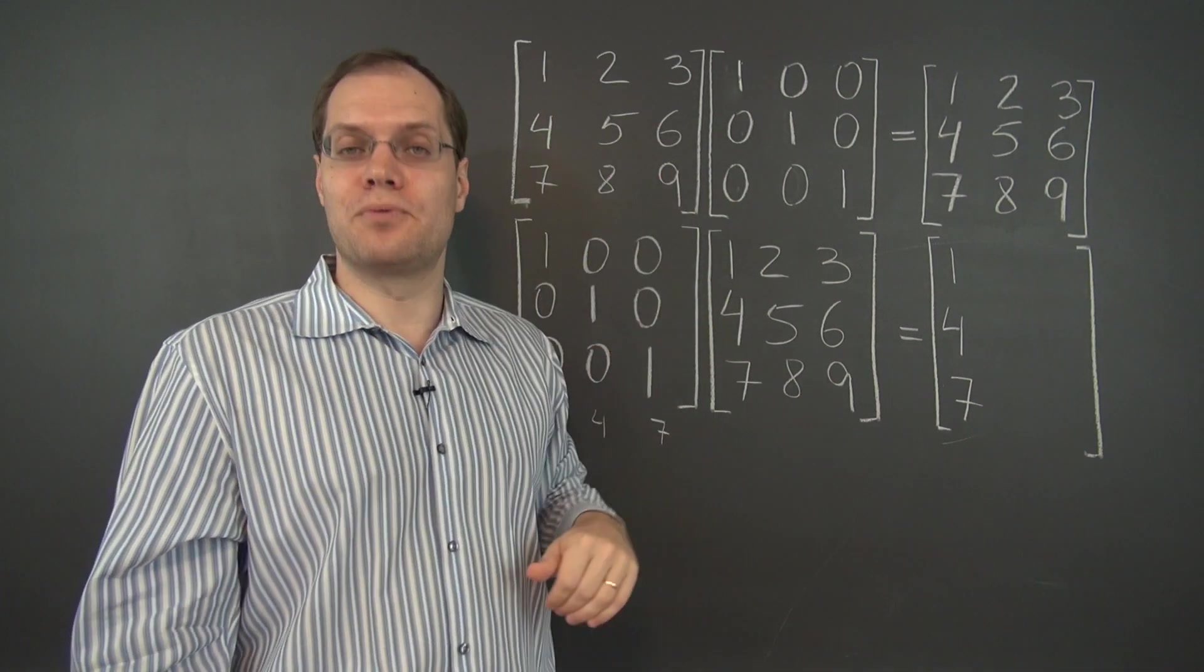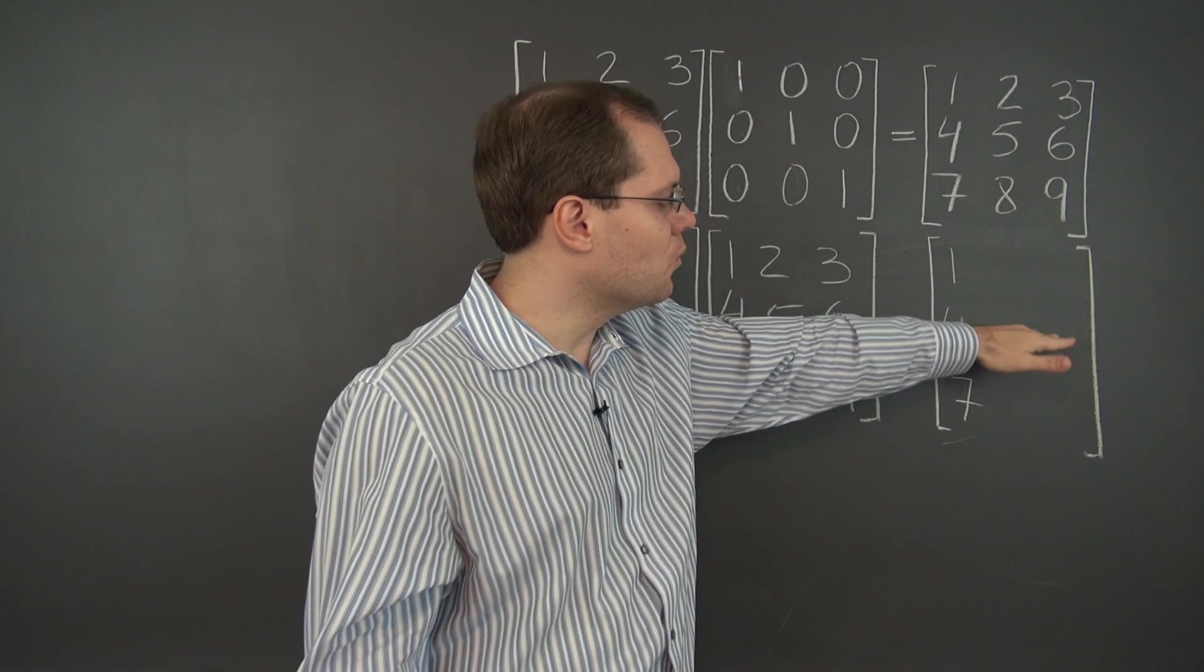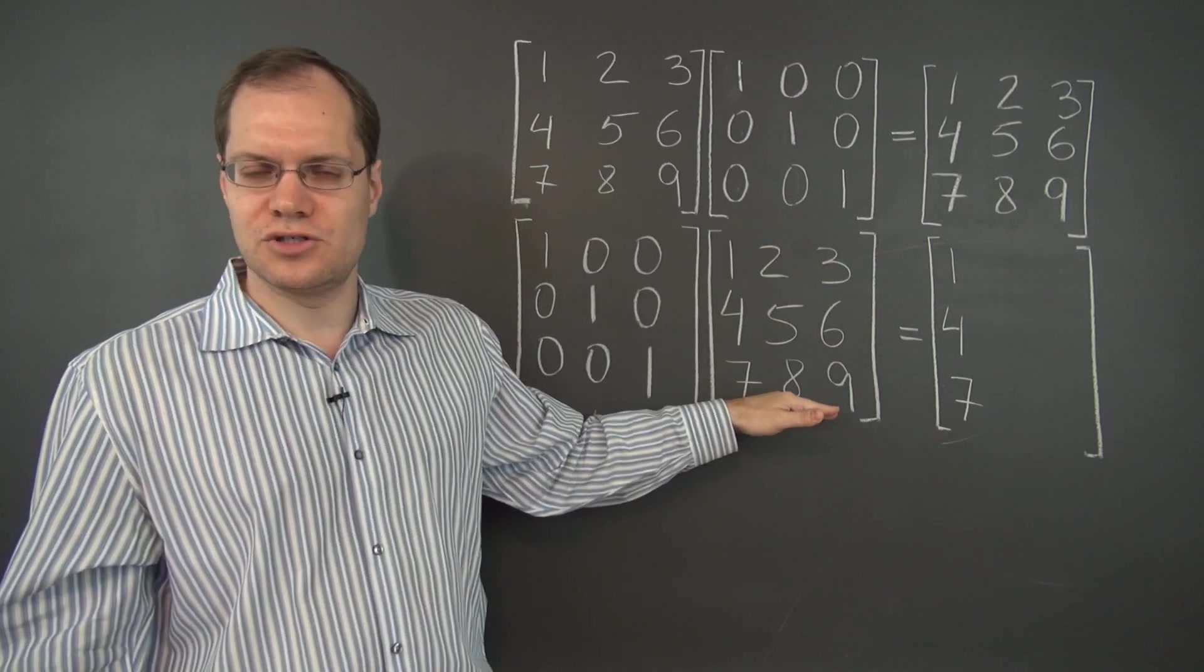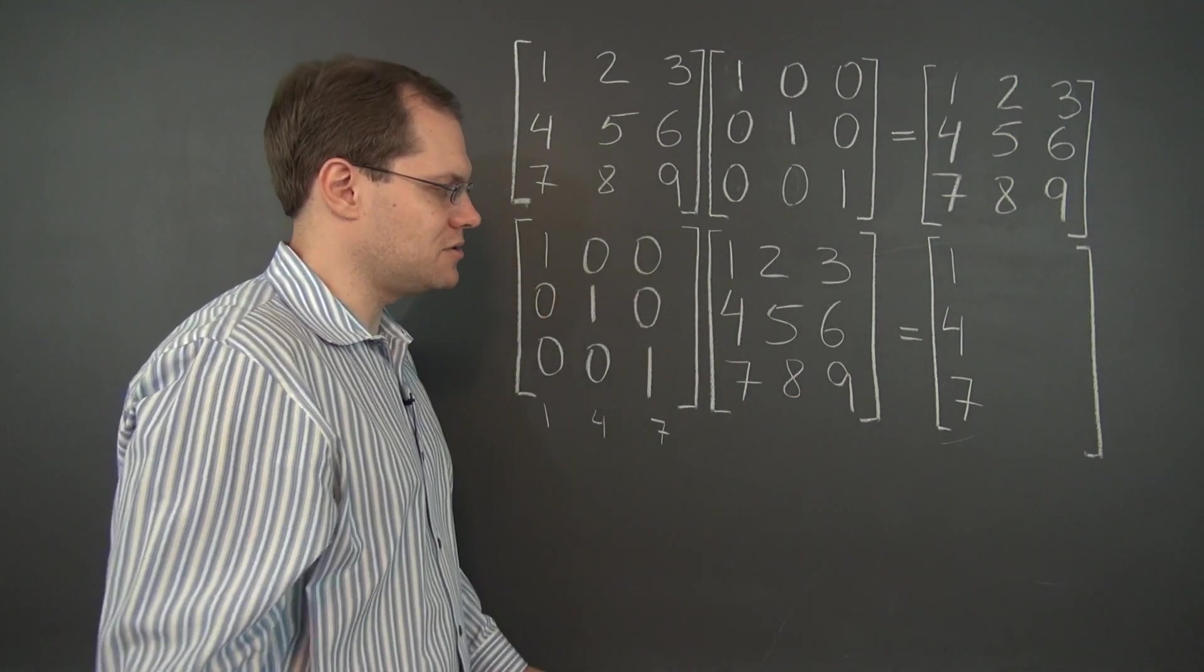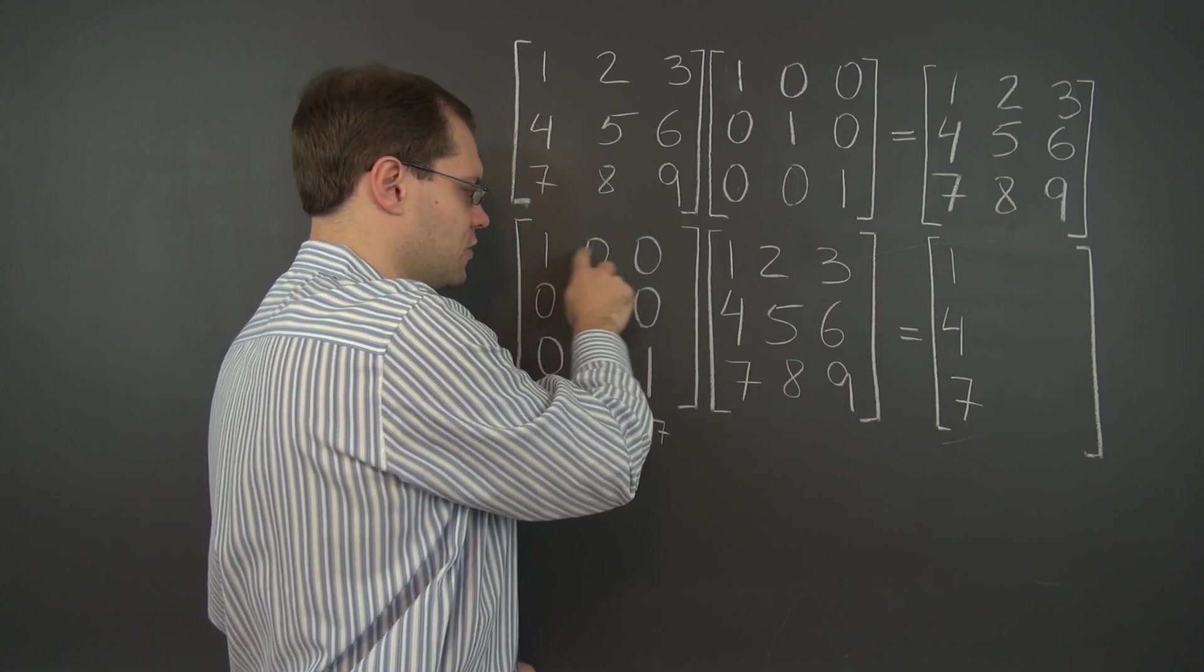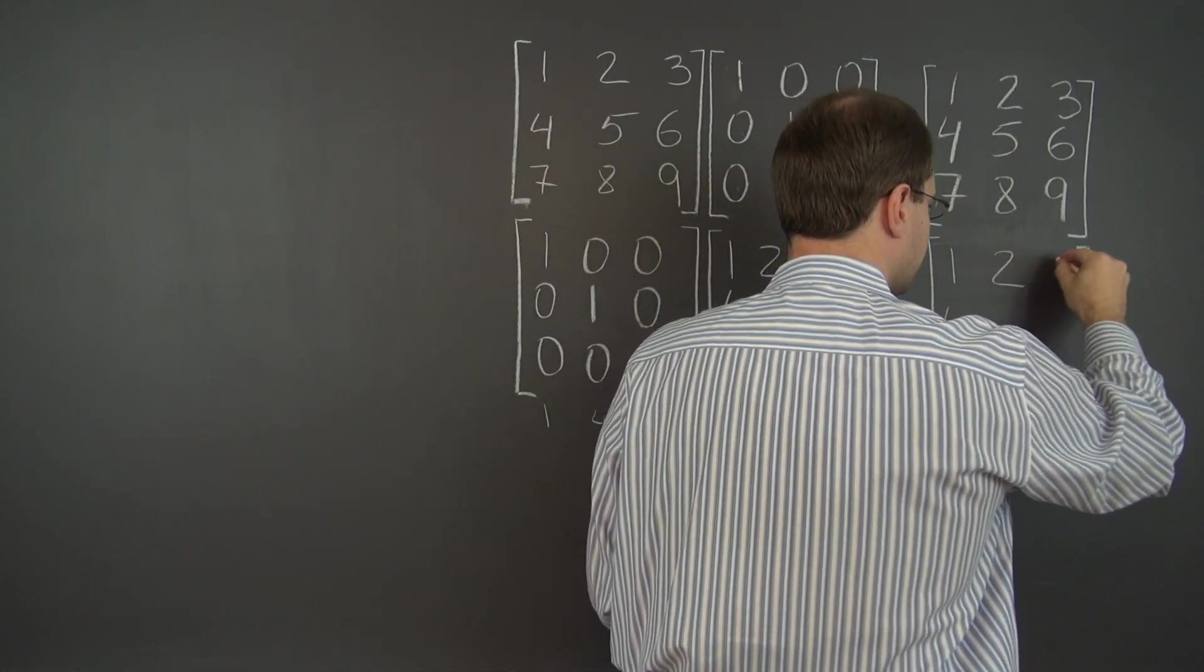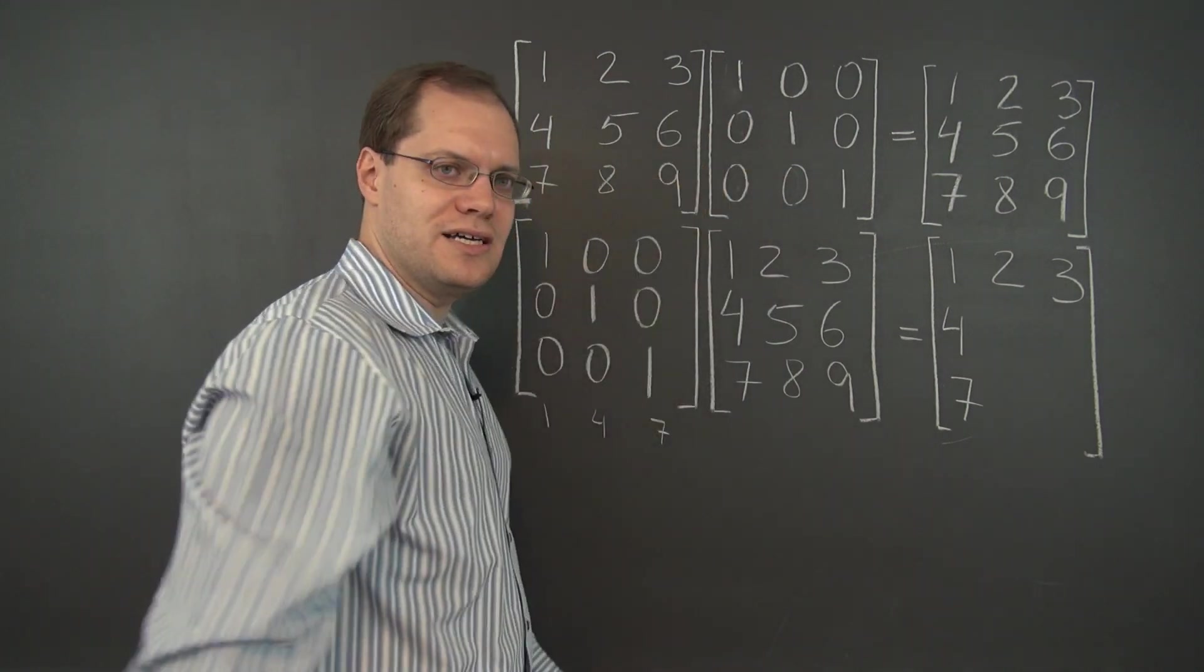So to see this product as simple a light as we did this product, you have to take the row perspective. We're getting the answer one row at a time, and all of the rows in the result are linear combinations of rows of this matrix, with coefficients coming from the rows of this matrix. So for the first row, the linear combination takes its coefficients from the first row of this matrix, and of course this says take the first row, 1, 2, 3.